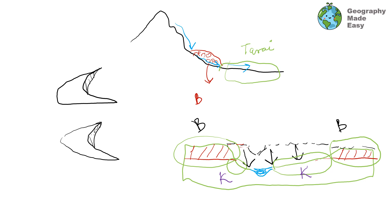Bhangar is older alluvium and Khadar is younger alluvium. Bhangar is above flood plain level and does not get inundated every year, whereas Khadar gets replenished each year. Within Bhangar, calcium depositions called Kankar are sometimes found, while Khadar is very clayey with fine silt. Bhangar is not as suitable for agriculture since nutrients are not replenished, while intensive agriculture can be practiced on Khadar. Bhangar is called Dhaya and Khadar is called Bet in Punjab.